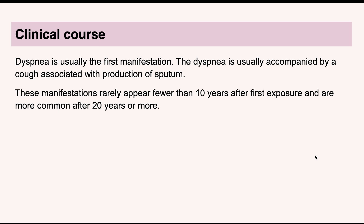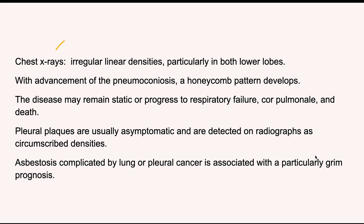Regarding clinical course: the person will have a history of asbestos exposure in industry and can present with dyspnea. Importantly, the latency period is very long — around 10 to 20 years — before manifestations appear. On chest x-ray, there will be linear densities and a honeycomb pattern. If it is only pleural plaque, the disease may remain static and asymptomatic with just densities on x-ray. However, in some persons it can progress to respiratory failure or cor pulmonale. If asbestosis causes lung carcinoma or mesothelioma, the prognosis is very bad.